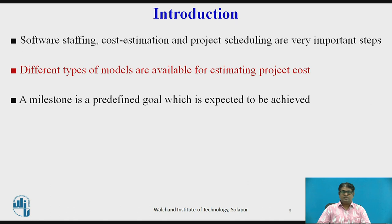Software staffing, cost estimation, and project scheduling are very important steps in software planning and management. A proper and cost-effective software product depends on proper staff organization and team structure. Different models are available for estimating project cost to make the software budget efficient. Project scheduling plays an important role in proper execution, helping achieve required milestones. A milestone is a predefined goal expected to be achieved during the project plan, indicating how far the project has progressed.